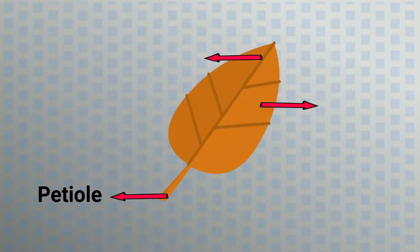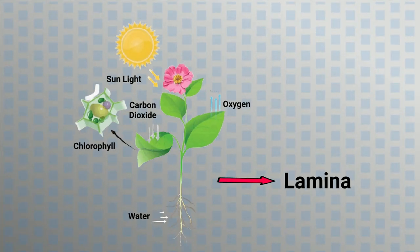Structurally, a leaf comprises a petiole, epidermis, and a lamina. The lamina is used for absorption of sunlight and carbon dioxide during photosynthesis.